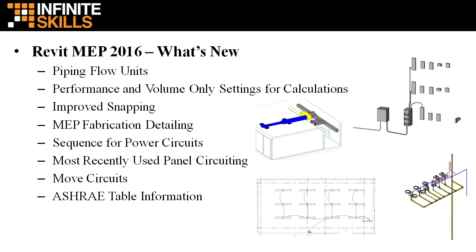This is to improve performance when you work with large fire protection, vent, and other systems. It's a new setting — volume-only — and it's been added to the calculation dropdown. When you're looking at calculation parameters, you can have it set to none or volume-only, and the volume parameter is calculated. This is for when you're working with large system models. You'll also see an improvement in the behavior of snapping and related snaps.